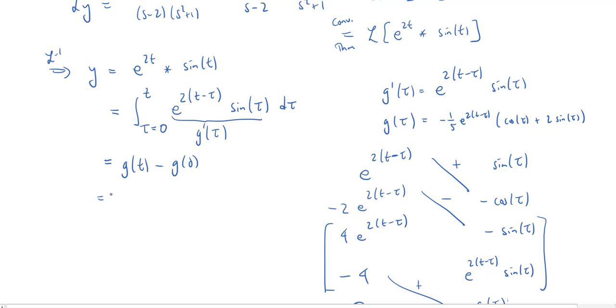What is g(t)? Well, that's what happens when we evaluate this g function when tau equals t. When tau equals t, we're going to get a 0 in this exponential, so that's all going to go away. We'll get negative a fifth cosine of t and then plus 2 sine of t. How about minus g(0)? Well, the minus and this minus will make it into a plus. And now when we evaluate when tau is 0, we're going to get, we have a 1 fifth.